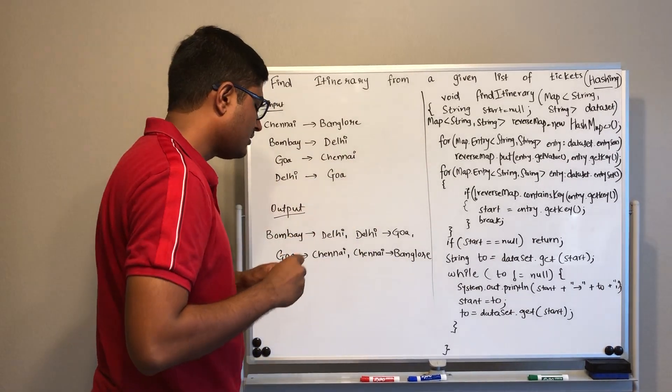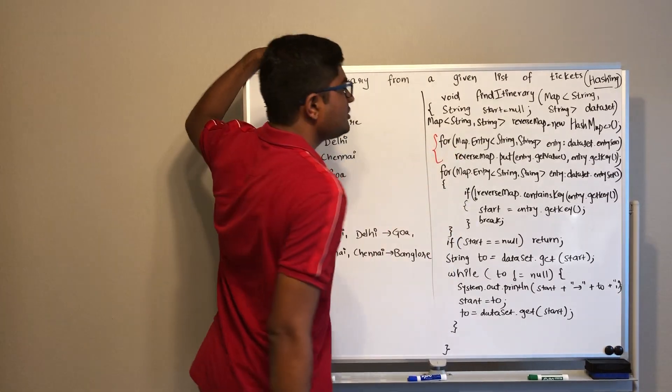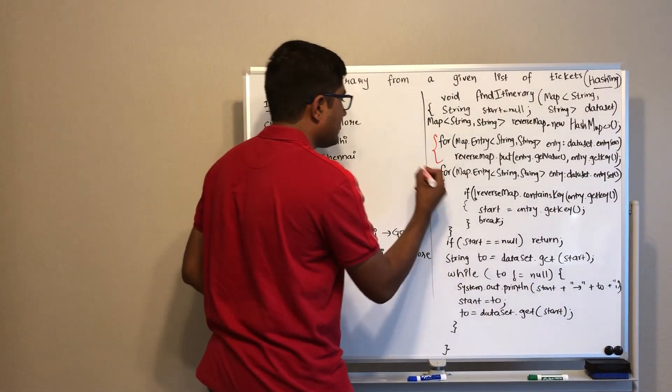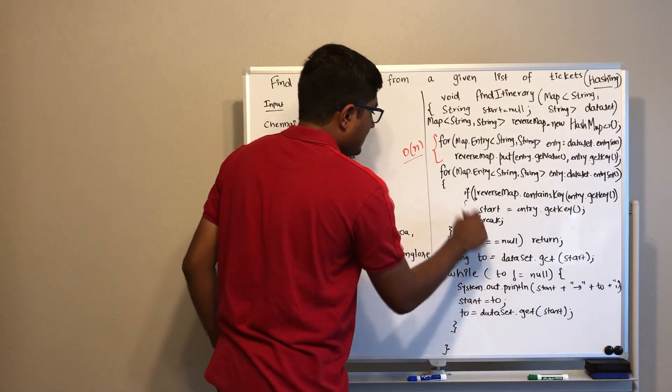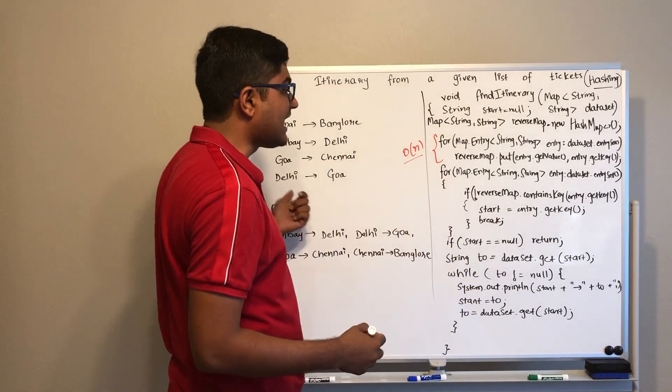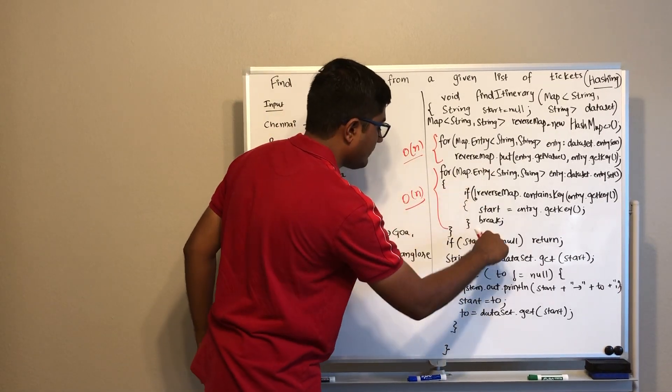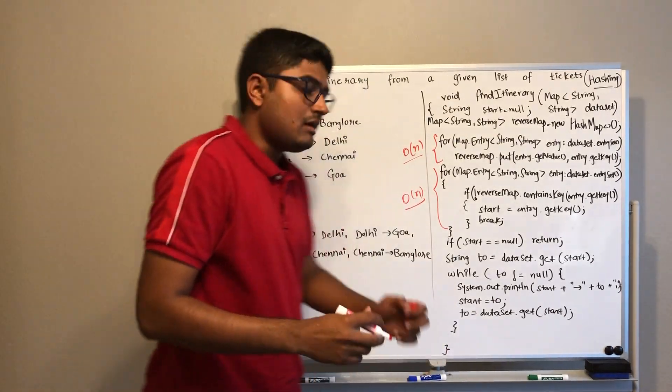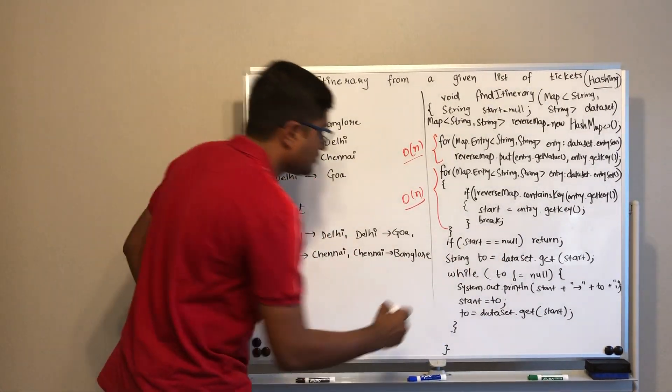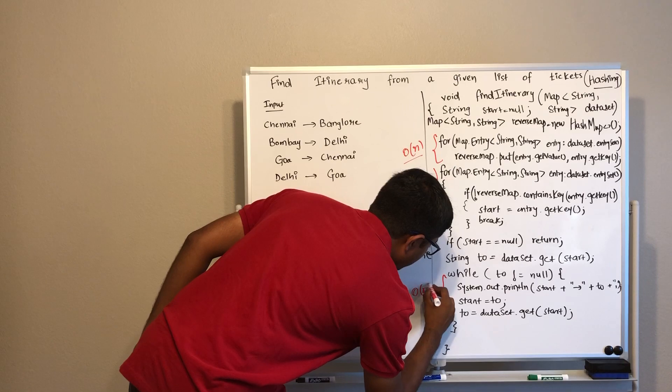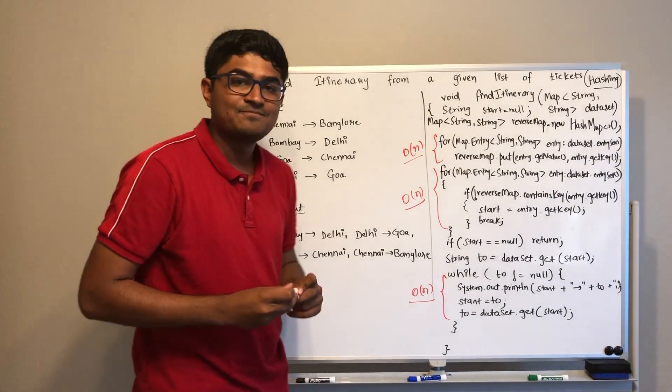Now if you talk about time complexity, first we iterated over our original map. Let's say the value in that is n. In order of n we got all our values in the reverse map. In the worst case, the last value of the key is a starting point, so even in that case the worst case is order of n. We found the starting point and ending point, then we went till to became null, so we iterated over the dataset in order of n. The time complexity of this code is order of n. Thank you.